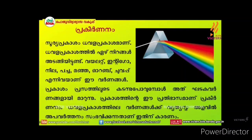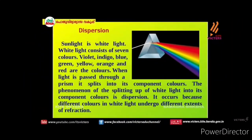Hello friends, welcome to the class. We are going to talk about Science. Sunlight is a white light; it consists of 7 different colors.